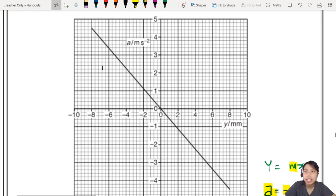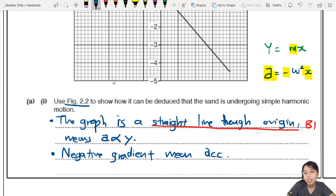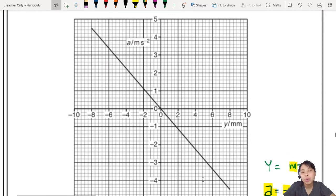So you can say, the graph is a straight line through the origin. That tells you that it is y equals mx. That means acceleration is proportional to the displacement. But you also mention, what is the negative sign there? This graph is going down with a negative gradient. So negative gradient means that acceleration is, I'm going to mention a direction, is opposite to the displacement. So a and x, opposite direction. That's why there is a negative sign there.